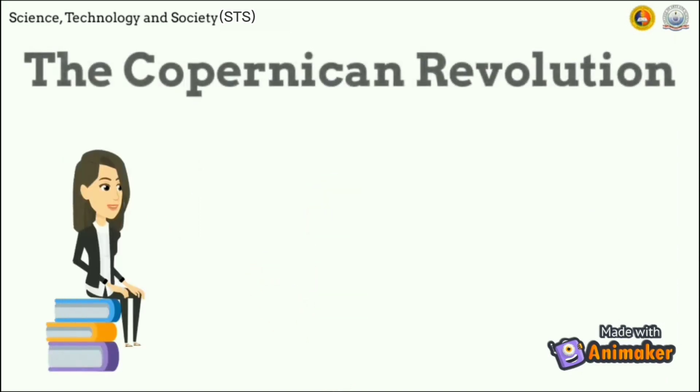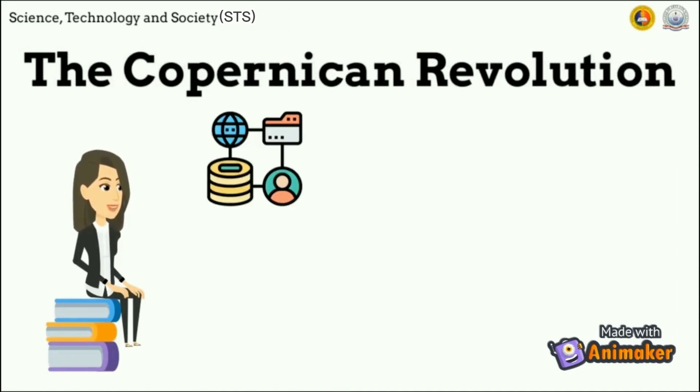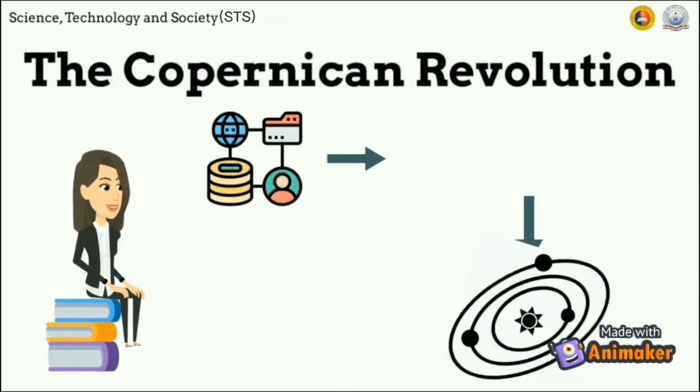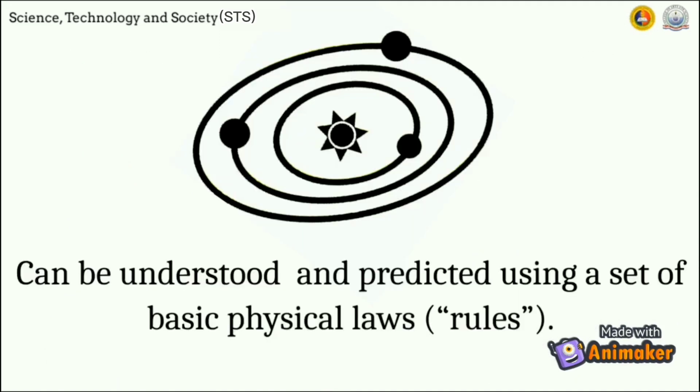The Copernican Revolution gives us an important framework for understanding the universe. The universe and everything in it can be understood and predicted using a set of basic physical laws or rules.